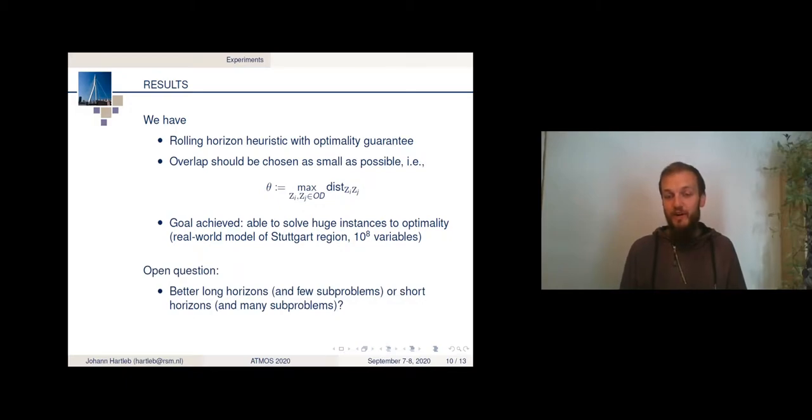However, it is still not yet clear how to choose the length of the horizon. So far, we do know that the overlap should be as small as possible, but at least the maximum distance to have the guarantee to have optimal solutions. But we do not know whether we should have long horizons, and that also just few sub-problems for regions, or whether we have short horizons and then many sub-problems, but each of them is smaller.